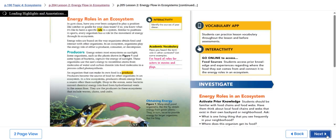We have a term called role in a system, which is similar to positions in sports. Every organism has a role in the movement of energy through its ecosystem. Energy roles are based on the way organisms obtain food and interact with other organisms in an ecosystem.